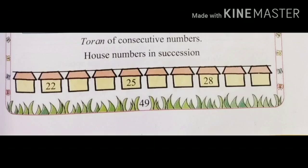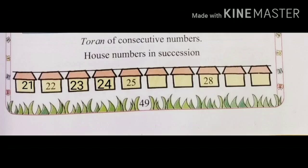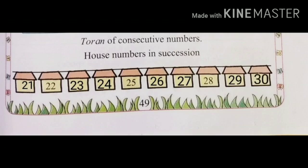Consecutive numbers in succession. Numbers 22, 25, and 28 are given. Before 22: number 21. After 22: 23. After 23: 24. After 24: 25. After 25: 26. After 26: 27. After 27: 28. After 28: 29. After 29: 30.